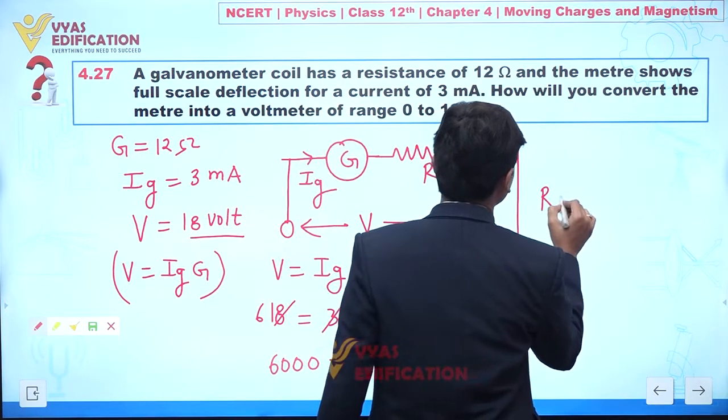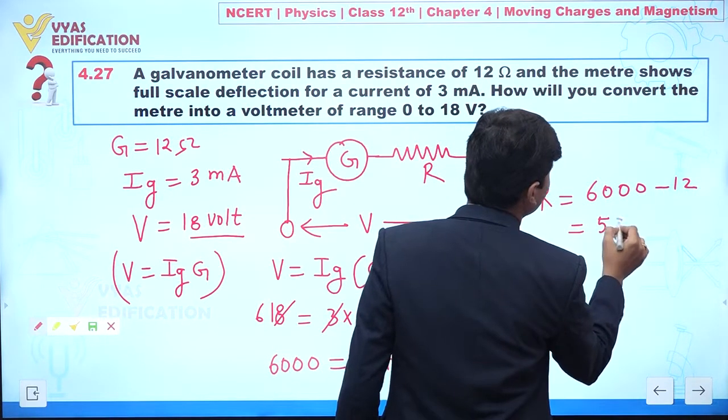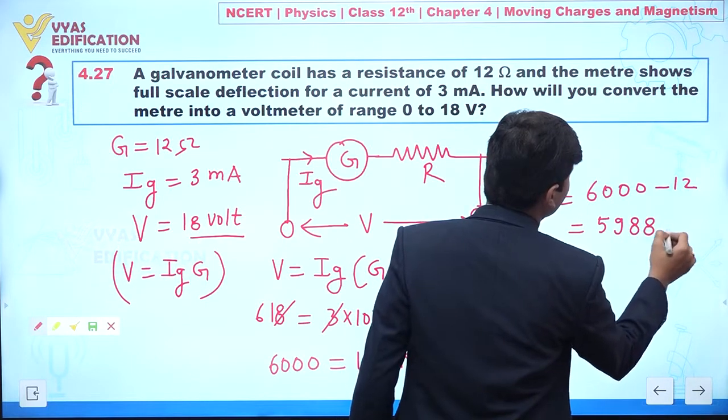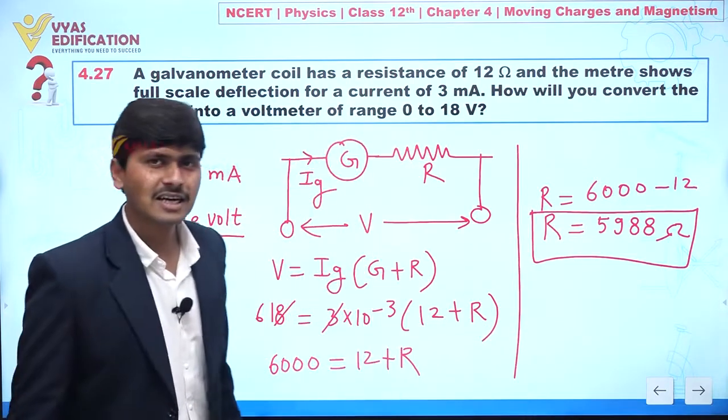From here we can say the external resistance that should be connected is 6000 minus 12, so this is equal to 5988 ohm. This is the value of capital R.